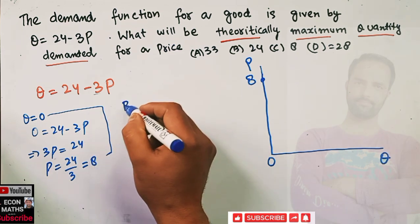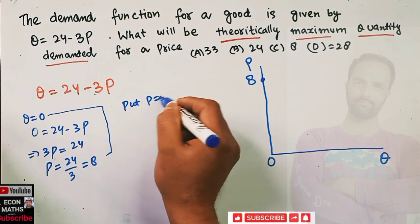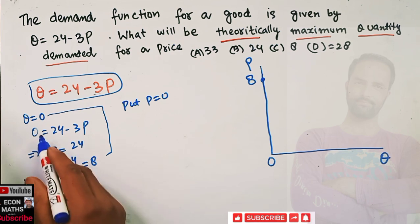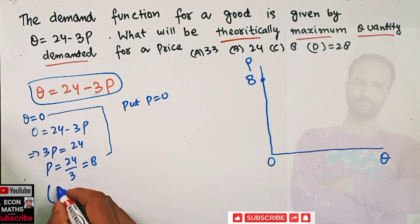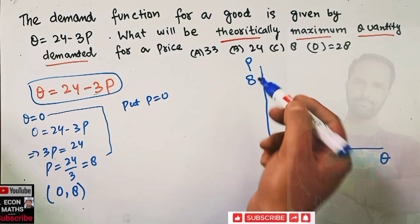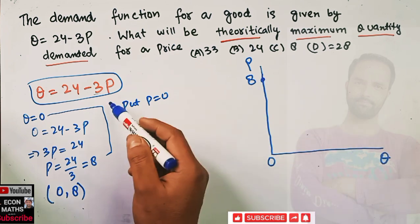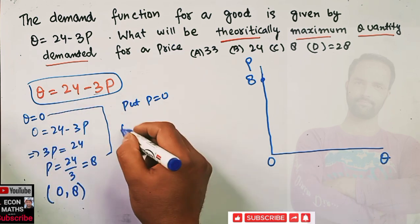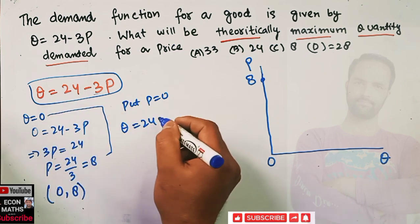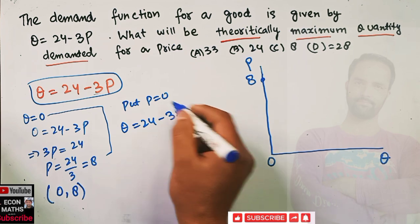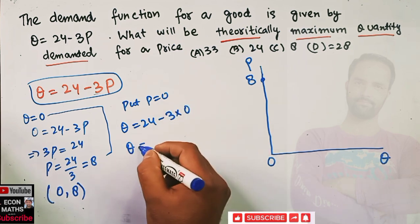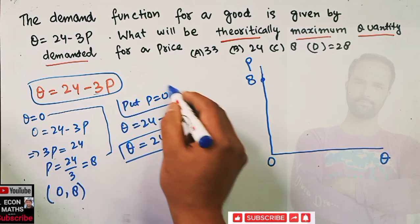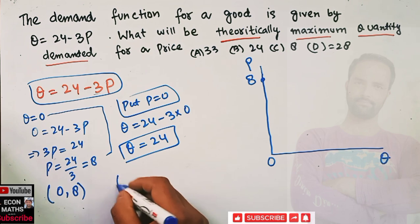To get the second point, we put p = 0 in this equation. So we have q = 24 minus 3 times 0, which means q = 24.